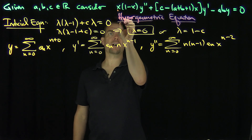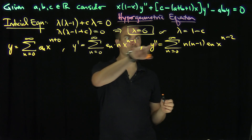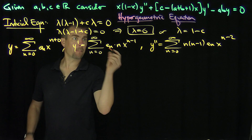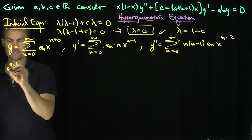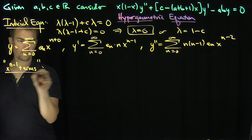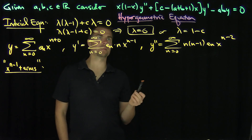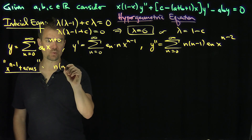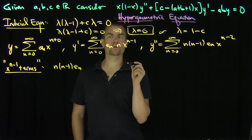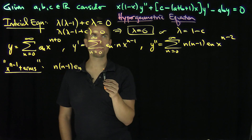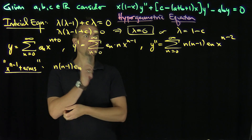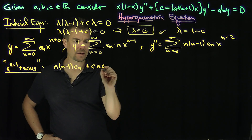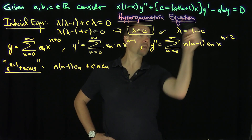Now, looking at the x^(n-1) terms: from x times y double prime we get n(n-1) e_n x^(n-1), and from c times y prime we get c·n·e_n x^(n-1). There are no other x^(n-2) terms because everything else is already past that order after multiplying by x. So collecting the x^(n-1) terms gives us e_n times n times (n minus 1 plus c). Every other term contributes an x^n term.